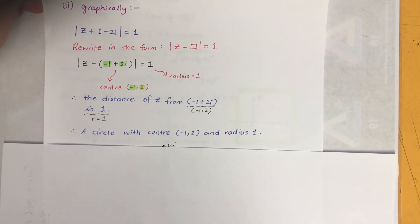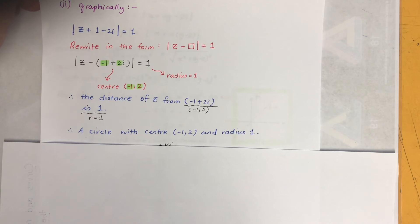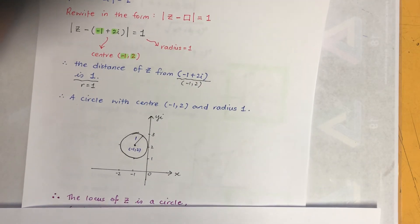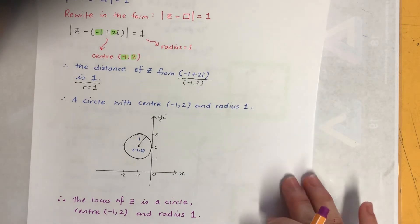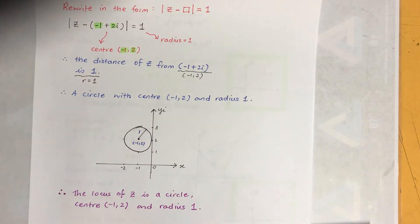And is 1, which is radius 1. So it's again a circle with a center minus 1 and 2, and radius 1, and it'll be the same diagram. And the conclusion will be the locus of Z is a circle with a center minus 1 and 2 and radius 1.